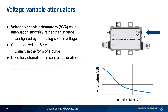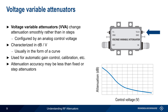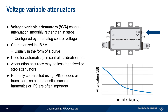Note that the attenuation accuracy in voltage variable attenuators is often somewhat less than that found in fixed or step attenuators. It's also worth keeping in mind that voltage variable attenuators are commonly constructed using pin diodes or transistor elements, so linearity characteristics such as harmonics or third order intercept may also be important.